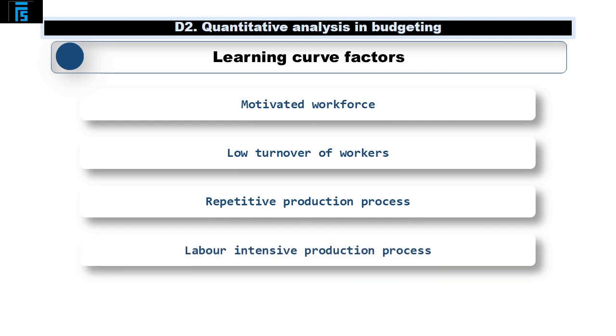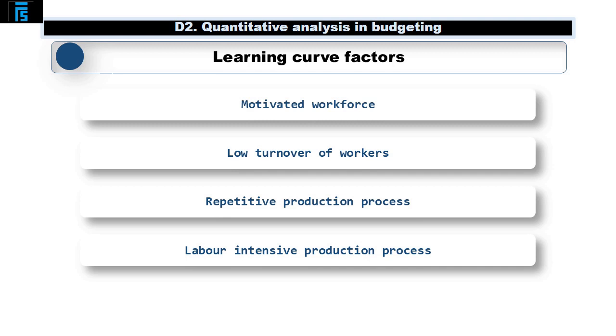The production process needs to be labour intensive. If machines are being used for the majority of the process, they will work at the same pace with large or small volumes and at both the start of the new production process and some time after the process has been in place. And the production process must be a new one to the business. If the same production process has been used for some time and we are merely tweaking the process, then clearly there will be little learning effect seen.